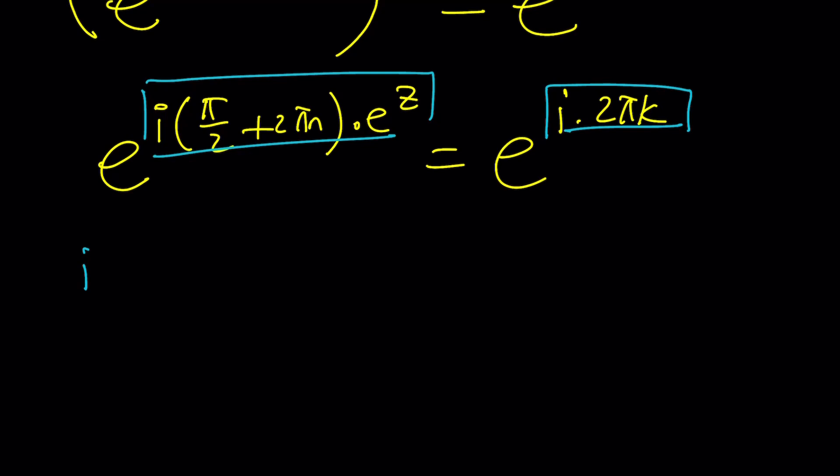Quite a few things are going to cancel out, such as we can pull out a pi here. It's going to be 1 half plus 2 n. Remember, n and k are integers and there are some limitations. Okay, now i cancels out, pi cancels out, so we end up with something like this.